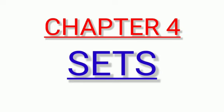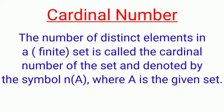So first, I am going to take cardinal number. Cardinal number: the number of distinct elements in a finite set is called the cardinal number of the set. Or you can say, in a finite set, the number of members present in the set is called cardinal number.